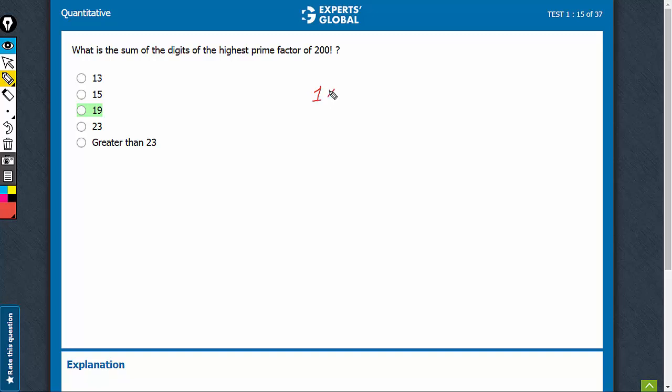200 factorial is 1 into 2 into 3 until 200. The highest prime factor would be a number which is just less than 200 and is a prime.